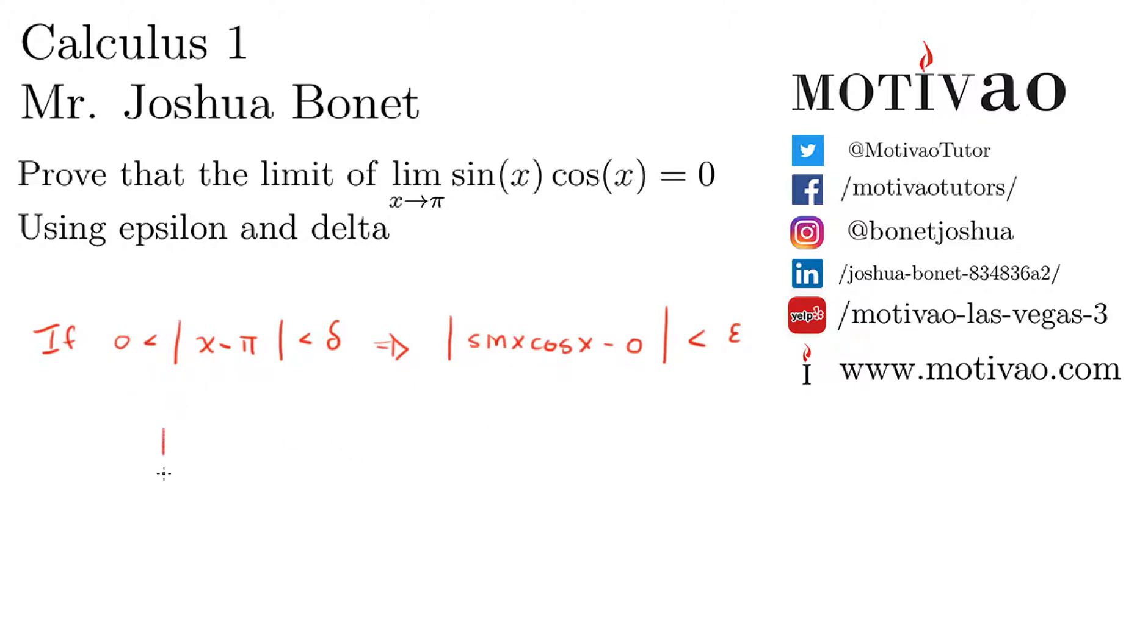Now, do we have a bound for sine of x times cosine of x? Well, the answer is yes, but how do we find it? We know that absolute value of sine of x is less than or equal than 1, and we also know that the absolute value of cosine of x is also less than or equal than 1.